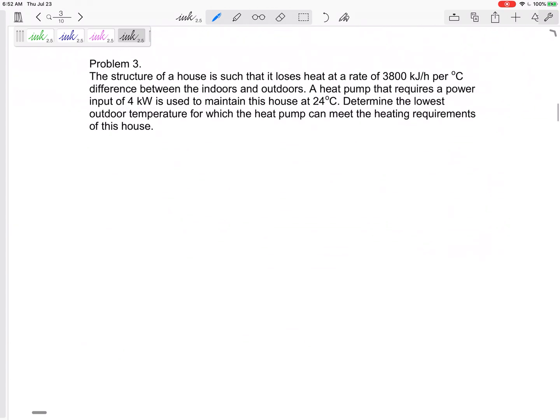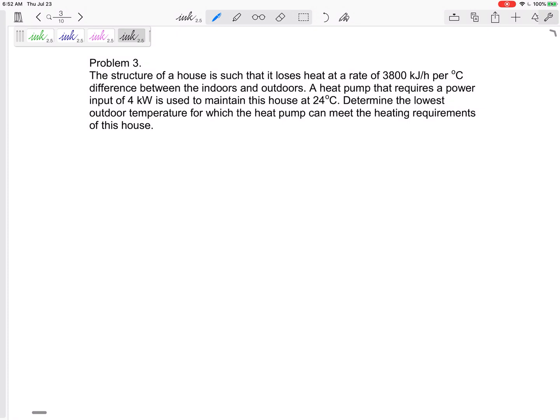All right, one more from chapter six. These problems aren't too terribly difficult. Hopefully they're not going to be worth as much as the second half. I think the first half of the test is 45 points from chapter six, 55 points from chapter seven. The structure of the house is such that it loses heat at a rate of 3800 kilojoules per hour per degree C difference between the indoors and the outdoors. A heat pump that requires a power input of four kilowatts is used to maintain this house at 24 degrees C. Determine the lowest outdoor temperature for which the heat pump can meet the heating requirements of this house.